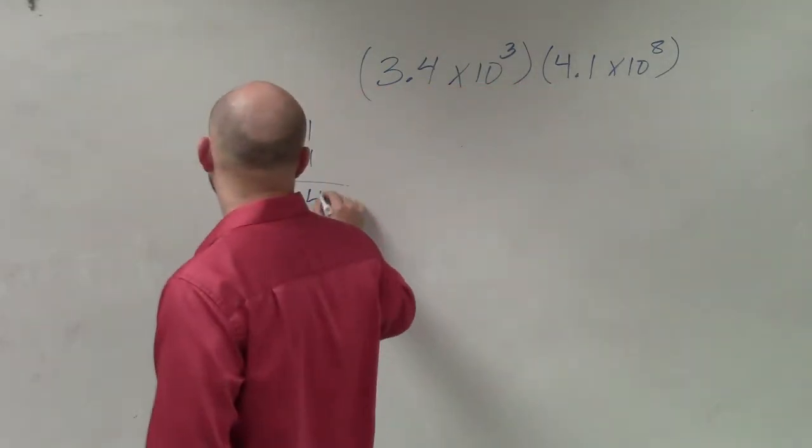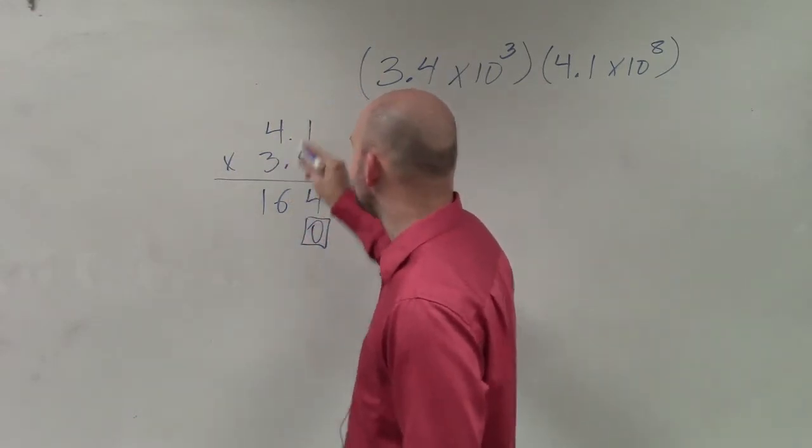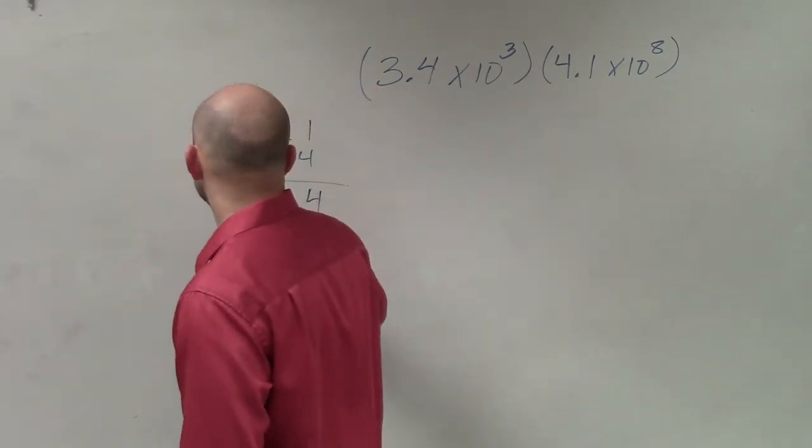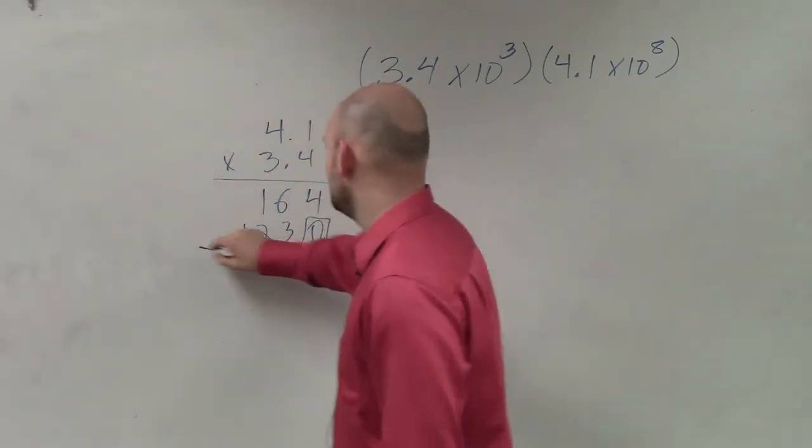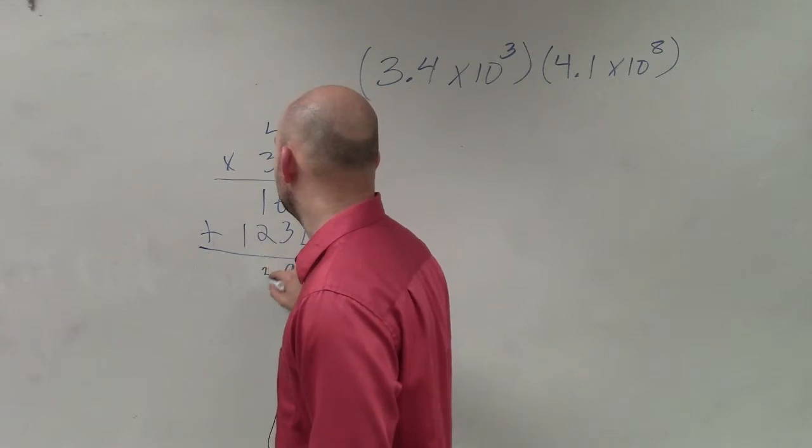Then basically, 4 times 1 is 4. 4 times 4 is 16. Create my spacer. 3 times 1 is 3. 3 times 4 is 12. Then I basically add my rows, 4, 9, 1, 3.